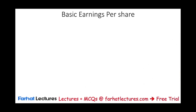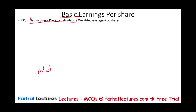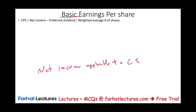In this session we'll focus on the basic, which is taking net income minus preferred dividend. Let's talk about preferred dividend. Remember, I said net income applicable to common shareholders — why? Because if you have preferred stock, you need to pay them first. After you pay them, what's left is net income applicable to common shareholders. Therefore, you take this number and divide it by the weighted average number of shares.